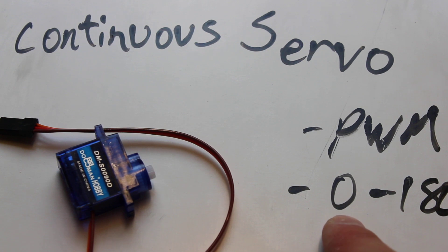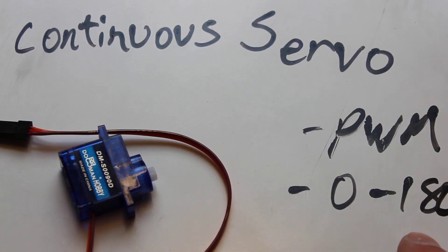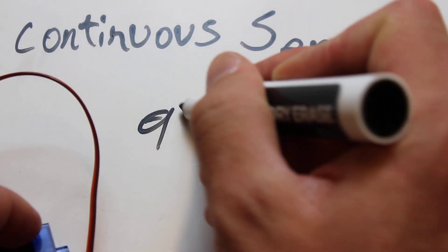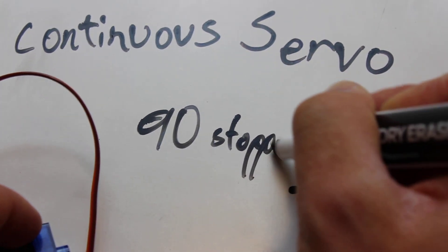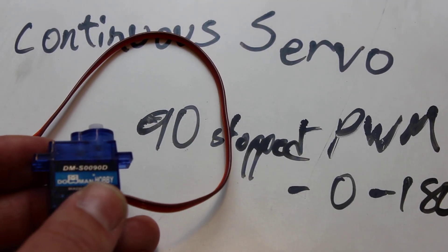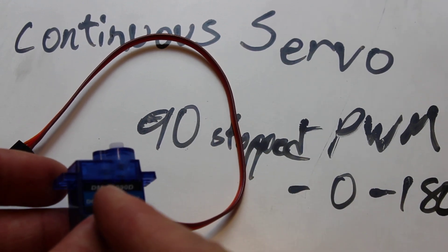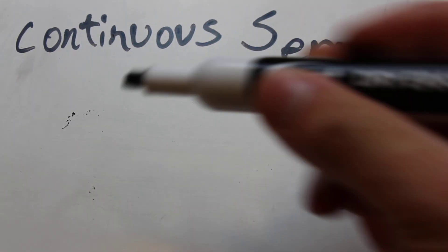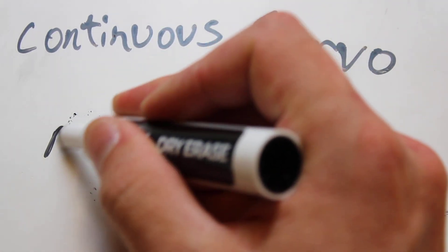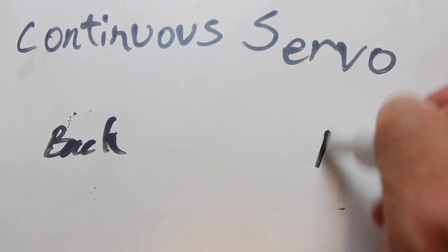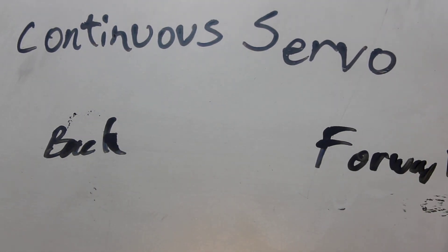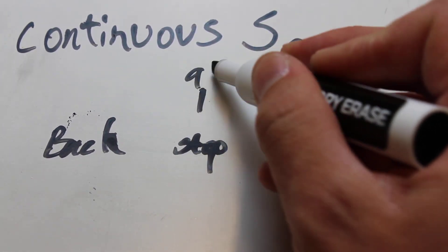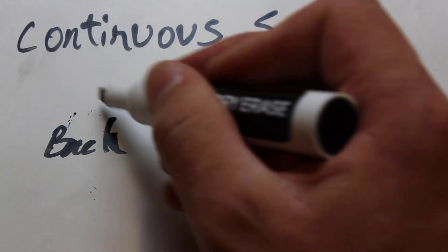What's odd about this is 0 is actually rotating backwards and 180 is rotating forwards, both at full speed. So actually, 90 is stopped. Which is a little bit weird — a large number means stop. Since you're only able to send a PWM signal from 0 to 180, you have to define speed of backwards, forwards, and stopped just like this. And this is 90, 180, and 0.